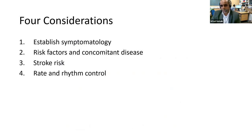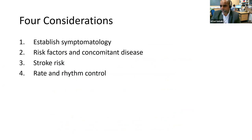There are really four things to consider when you see someone with AF for the first time. First, what are their symptoms and how can you improve them? Second — now with much bigger emphasis — is other risk factors and concomitant disease, because AF tends not to come on its own. Third, and most urgently, assessing stroke risk and getting that corrected at the earliest opportunity. Fourth, getting the heart rate and rhythm under control depending on the patient's overall clinical status.